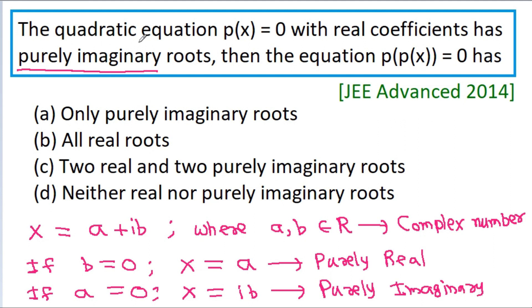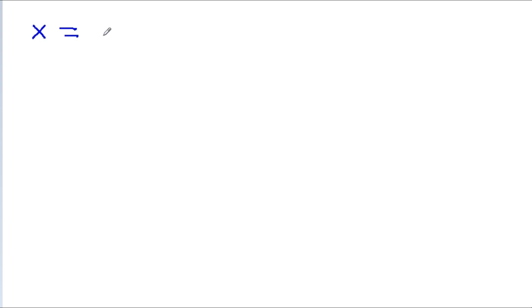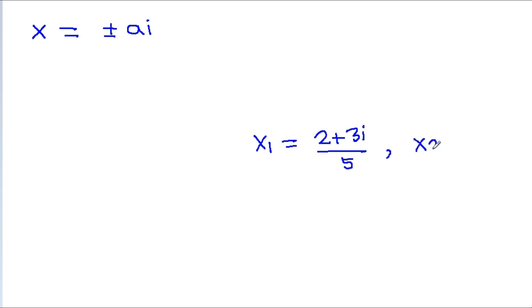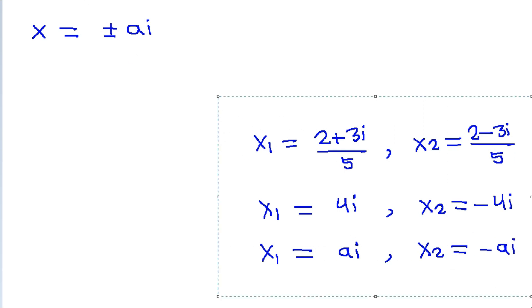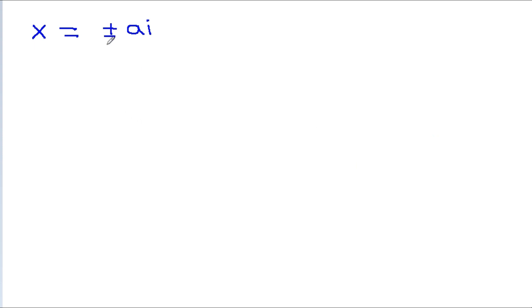We are given that the quadratic equation p(x) = 0 has a purely imaginary root. That means the roots will be x = ±ai. Imaginary roots always exist in pairs. For example, if x₁ = 2 + 3i/5, then x₂ = 2 − 3i/5. Similarly, if x₁ = ai, then x₂ = −ai. So the roots are x = ±ai.